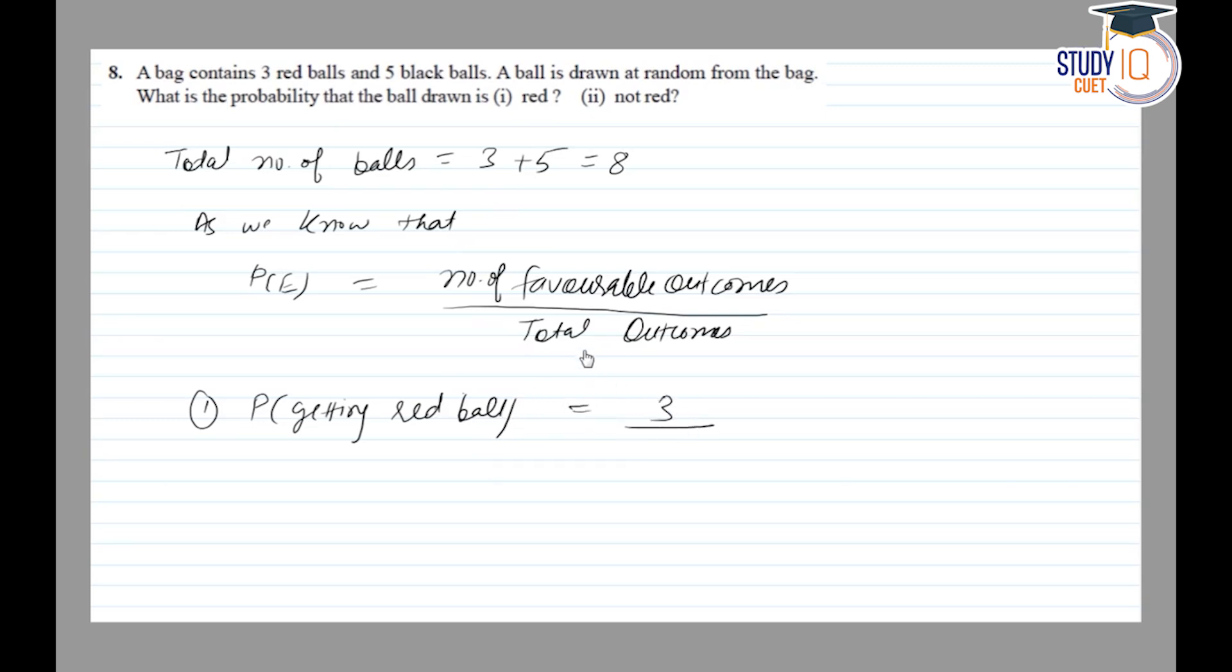Three red balls, total outcome is 8 balls, so probability is 3 by 8.